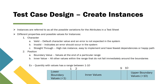Once you create your attributes, you need to create different instances of those attributes. These instances are nothing but different variations of your attribute in your application. For example, when we created an attribute called customer type or user type, it had different values in your application — it could be a registered user, unregistered user, a business user, or a technical user.